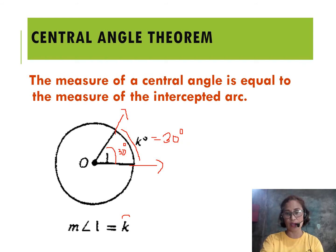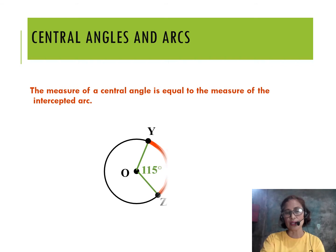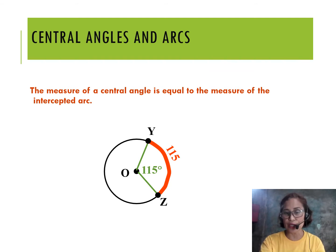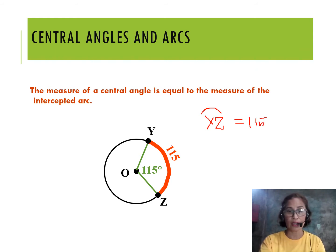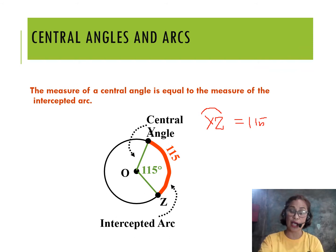Let's apply this theorem in our next example. For example, angle Y-O-Z measures 115 degrees, therefore arc Y-Z is also 115 degrees. So the central angle Y-O-Z intercepts arc Y-Z, shown in red, which also measures 115 degrees.